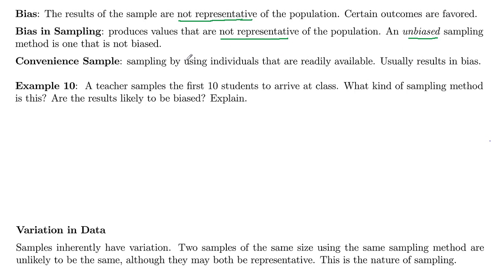One type of sampling that usually results in biased results is something called convenience sampling. This is sampling where you use individuals or objects that are readily available, and that almost always results in some bias.